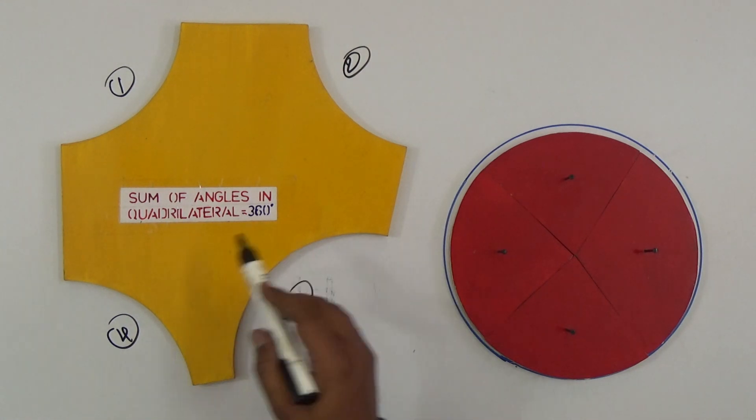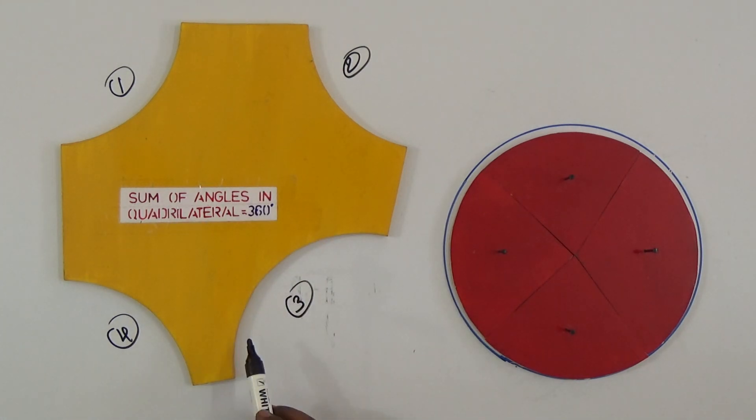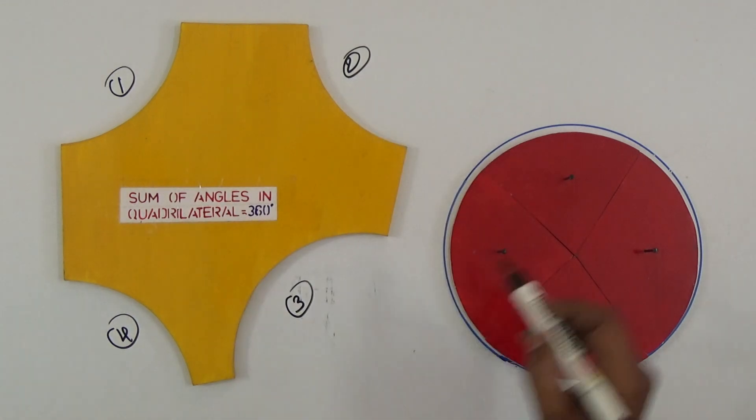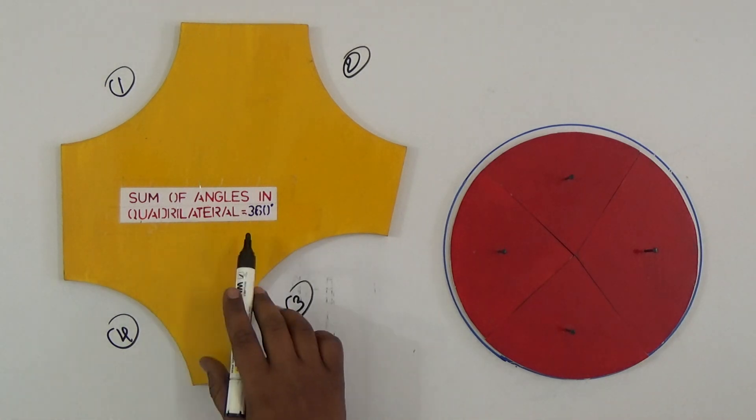A quadrilateral is nothing but four sides. It's a closed figure. If you take any quadrilateral and cut into four parts, every angle, and join them, it forms a circular shape. This is the way we can prove sum of the angles in a quadrilateral is 360 degrees in simple and easy way.